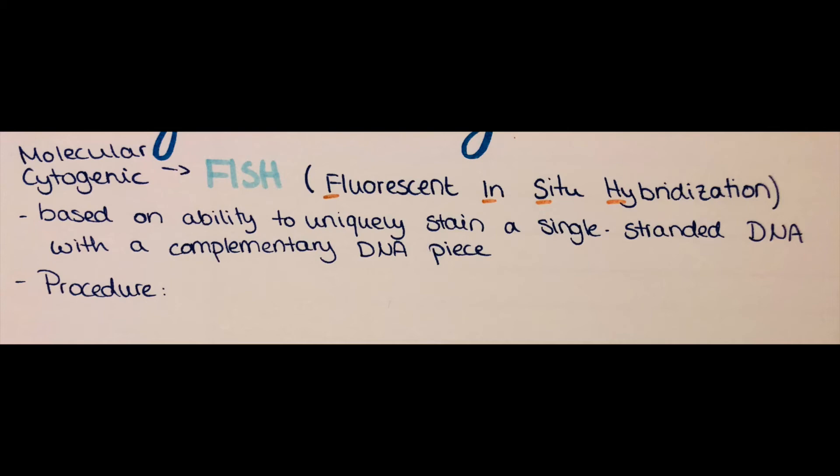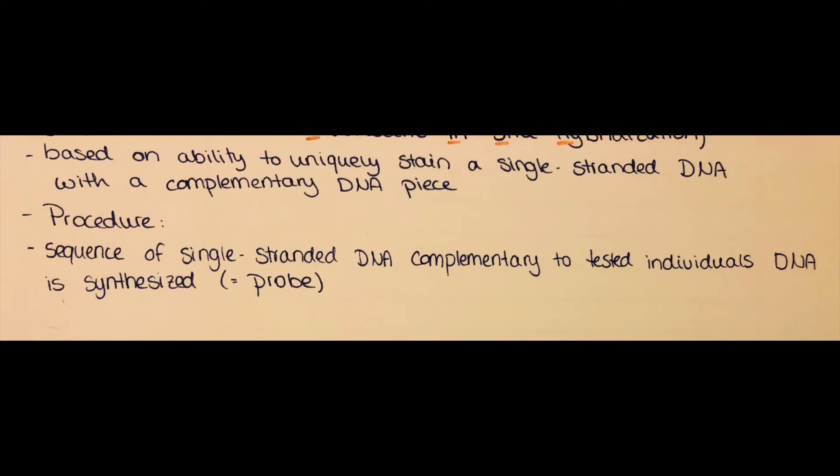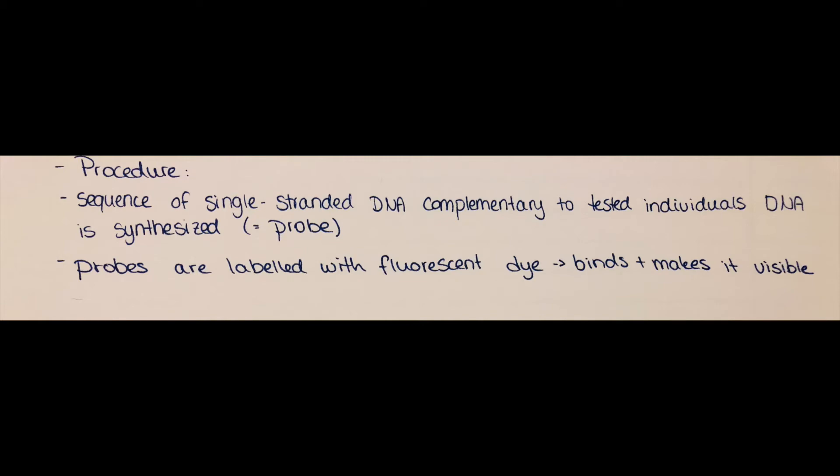And hybridization means that there's some kind of mix created of the original DNA and a new DNA. Because in this technique, there's a sequence of single-stranded DNA created which is complementary to the tested individual's DNA. And this is called the probe, and this probe is labeled with a fluorescent dye.